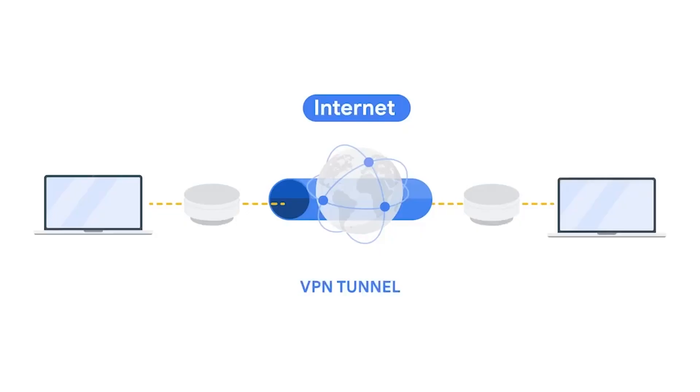The good news is that malicious packet sniffing can be prevented. One way to protect against it is to use a VPN to encrypt and protect data as it travels across the network. When you use a VPN, hackers might interfere with your traffic, but they won't be able to decode it to read your private information.